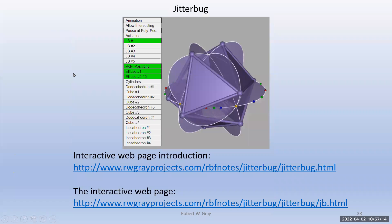Recently I made an interactive web page for the jitterbug that allows people to experiment with it — different perspectives, turning on and off icosahedra and dodecahedra. Because there are five cubes within the dodecahedron, I made five jitterbugs corresponding to those five cubes. The synchronized motion of those five jitterbugs completing all the vertices of the dodecahedron is really fantastic. Perhaps I could demo that at the end.